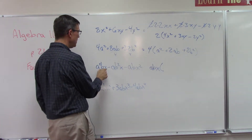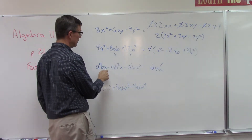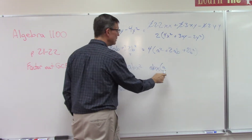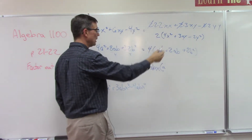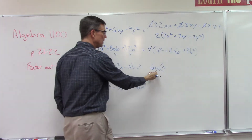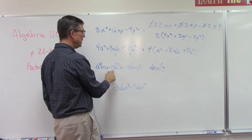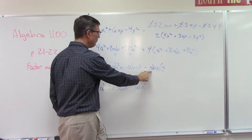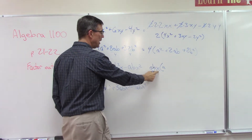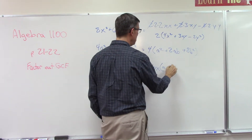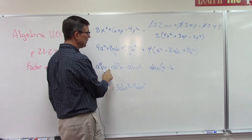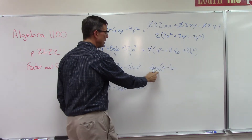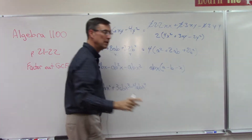If I take out abx from this term, what's left? I actually have two a's here, so when I take out one a, I have one a left. Picture it: a times a times b times x — pull out one abx and you're left with just a. For the next term: a times b times b times x — pull out the a, one b, and the x, and what's left is just b. Then minus b because of the minus sign. For the last term: pulling out a, b, and one x — this has two x's so I'm left with minus x.